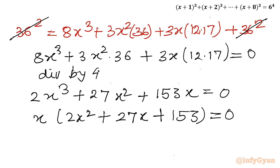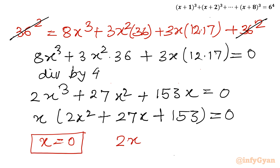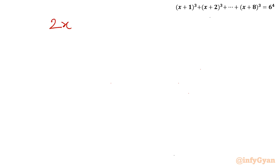Factoring out x: x(2x² + 27x + 153) = 0. So either x = 0, which is our first real solution, or we must solve the quadratic 2x² + 27x + 153 = 0.